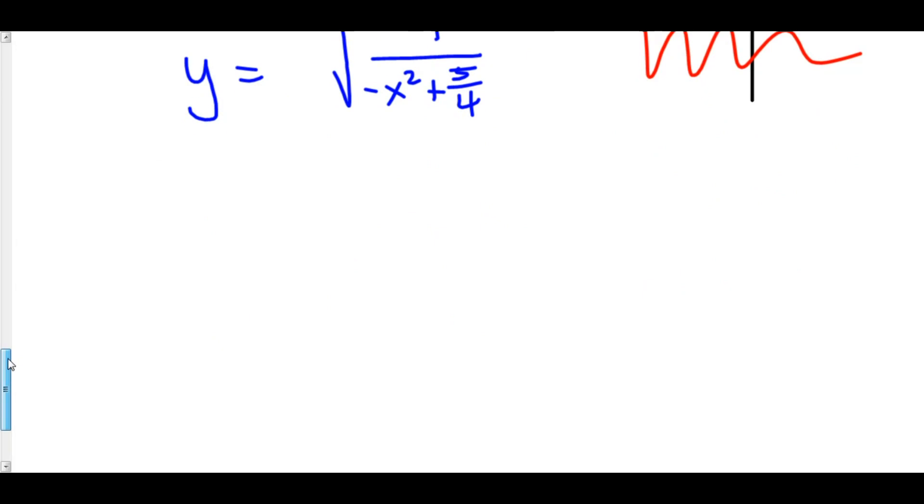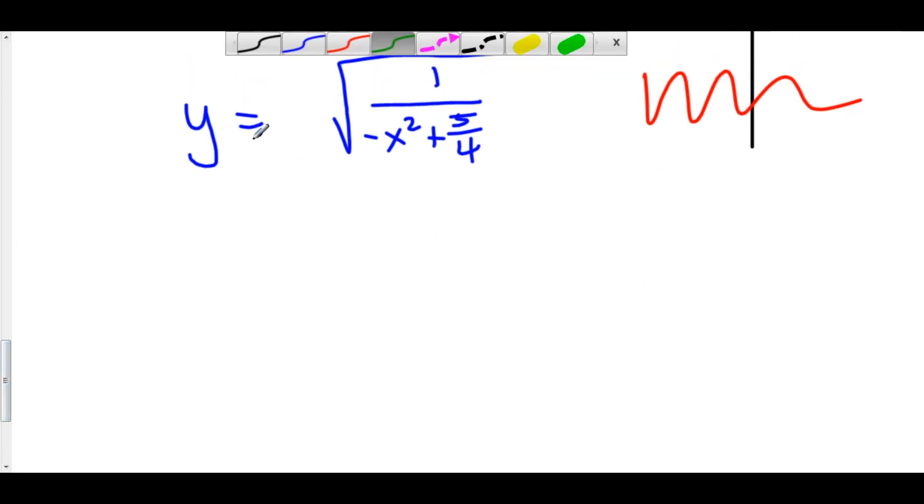Now let's just clean this up a little bit and we'll be done. Here we have y is equal to the square root of 1 is just 1 over the square root of 5 over 4 minus x squared.